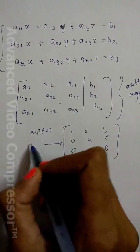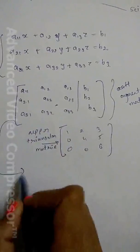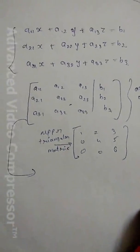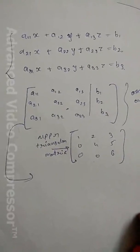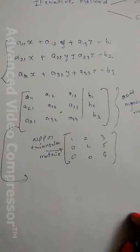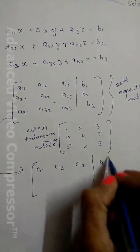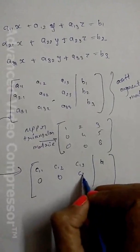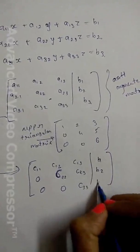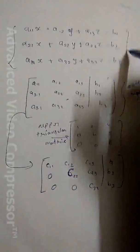An upper triangular matrix looks like: [1, 2, 3 / 0, 4, 5 / 0, 0, 6]. We apply row operations such as addition, multiplication, and division — we can take a common element from each row. We cannot apply column operations, only row operations. After performing these operations we obtain the upper triangular matrix, which gives the solution of the linear equations.